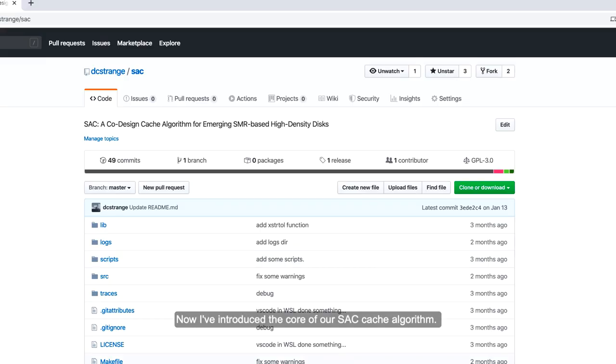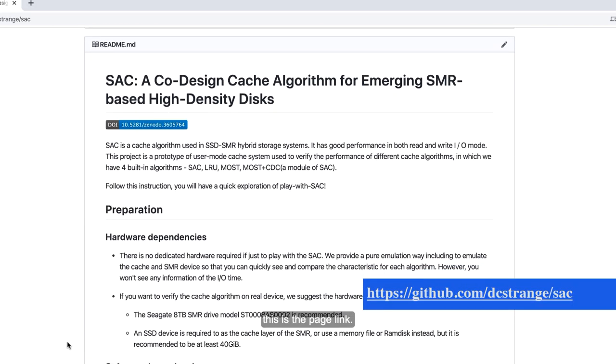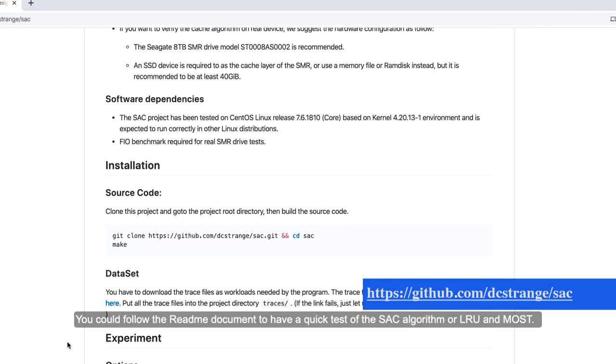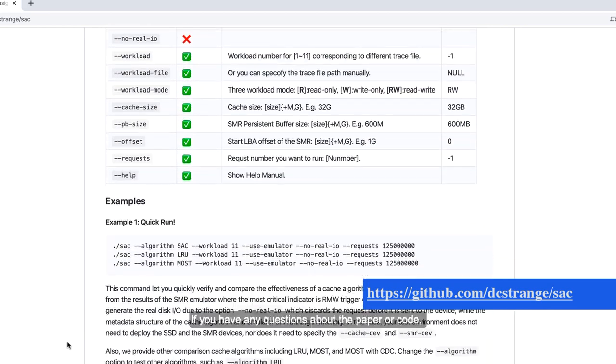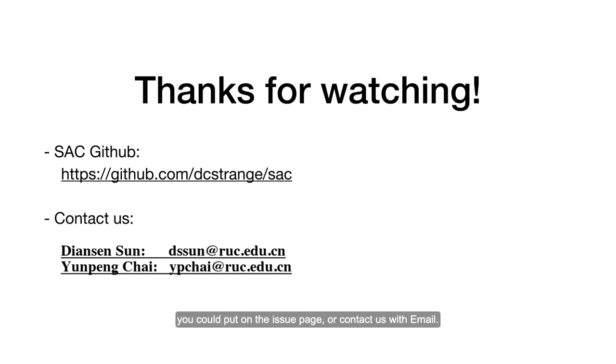Now I've introduced the core of our SAC cache algorithm. More details can be found in the paper. Additionally, I published the SAC source code along with our SMR emulator on GitHub. This is the page link. You can follow the readme document to have a quick test of SAC algorithm, or LRU and MOST. If you have any questions about the paper or code, you can put it on the issue page or contact us with email. Okay everyone, thanks for watching.